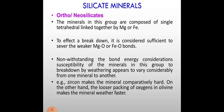Silicate minerals — ortho/neosilicates: the minerals in this group are composed of single tetrahedra linked together by magnesium or iron. To effect a breakdown, it is considered sufficient to sever the weaker Mg-O or Fe-O bonds. Susceptibility of minerals in this group to breakdown by weathering varies considerably from one mineral to another. For example, the dense packing in zircon makes the mineral comparatively hard; on the other hand, the looser packing of oxygen in olivine makes the mineral weather faster.